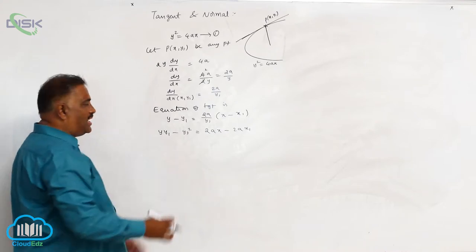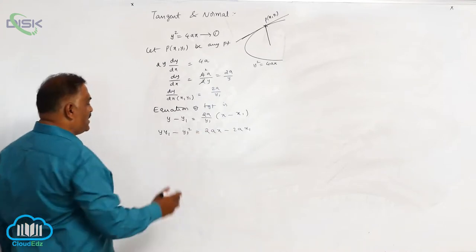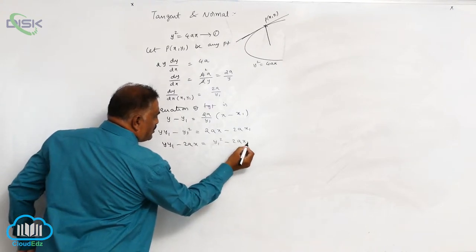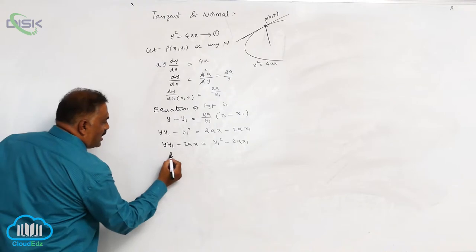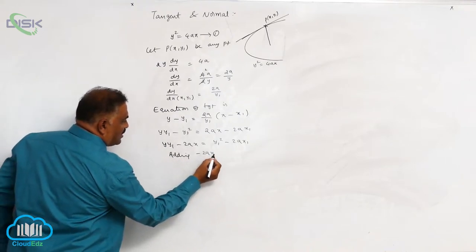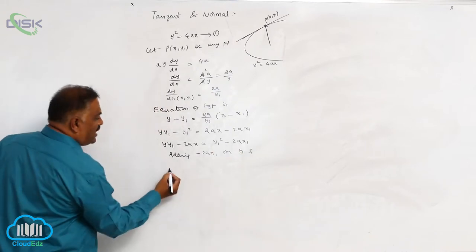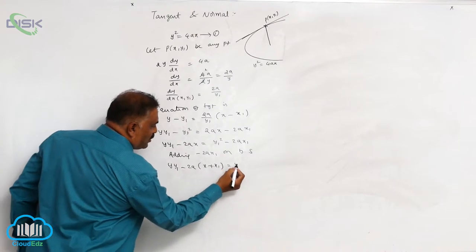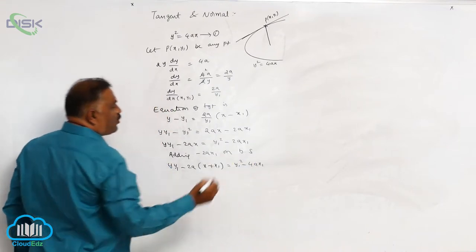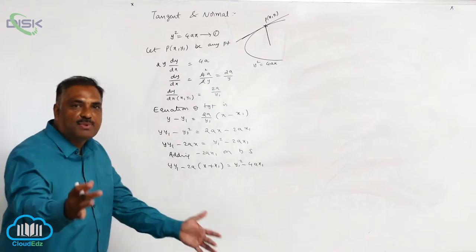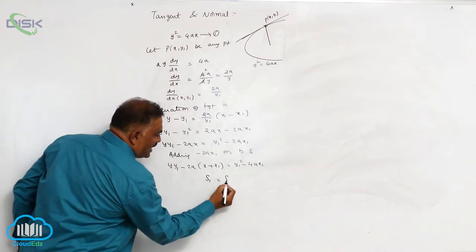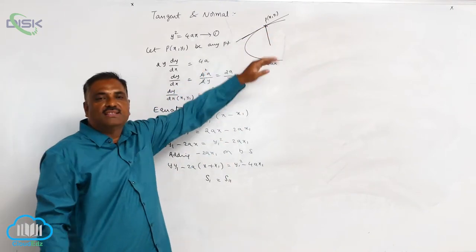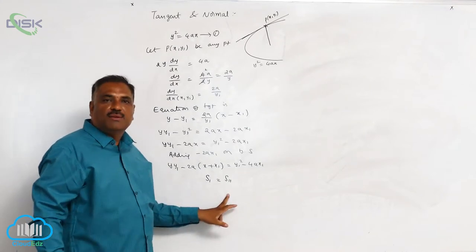Send 2ax to this side, y1 square to that side. This gives yy1 minus 2ax is equal to y1 square minus 2ax1. Adding minus 2ax1 on both sides, we get yy1 minus 2a into x plus x1 is equal to y1 square minus 4ax1. As per the notations, this is S1 and this is S11. Since the point P x1, y1 lies on the parabola, S11 will become 0.